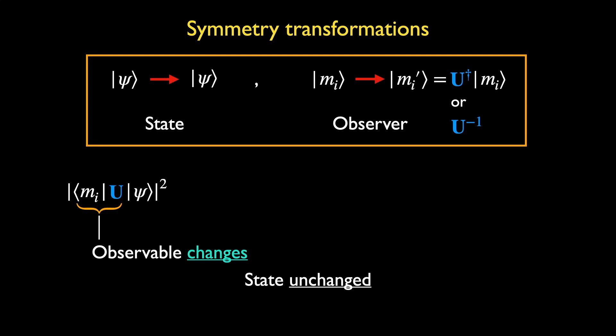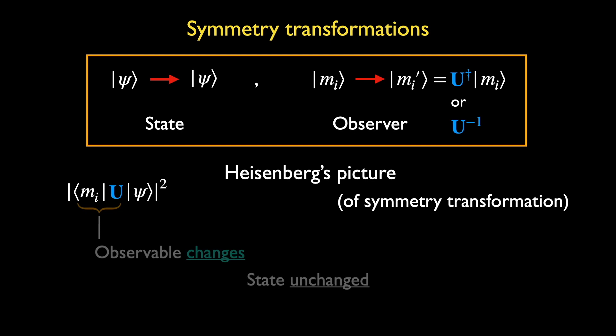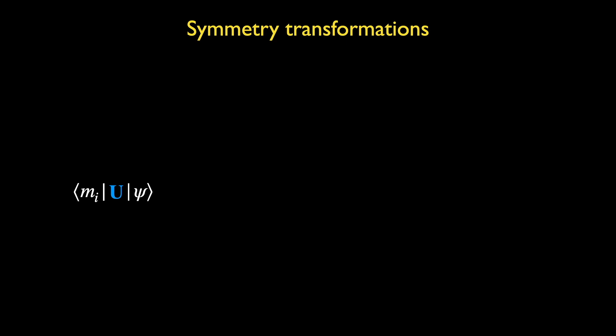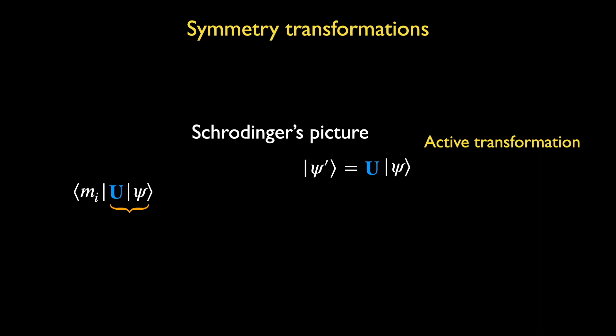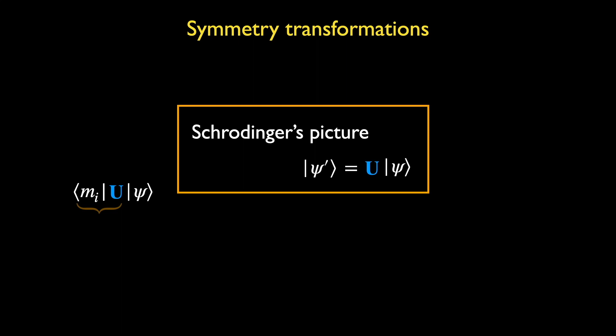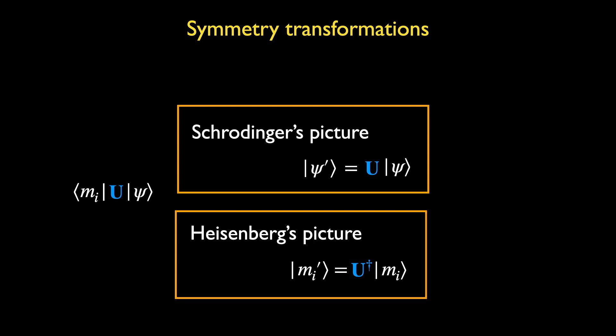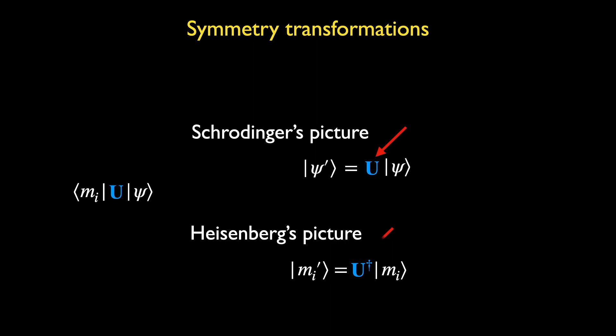The effects of a symmetry transformation is summarized in the yellow box. The result is that the probabilities of measurement outcomes are now affected by these transformations, as can be seen when we look at the probability of finding the outcome m_i when observing a system in an initial state psi. This probability transforms in a way that is obviously not equal to the original probability. Therefore symmetry transformations can now be distinguished physically by these changes. We can look at symmetry transformations from two perspectives which are physically equivalent.